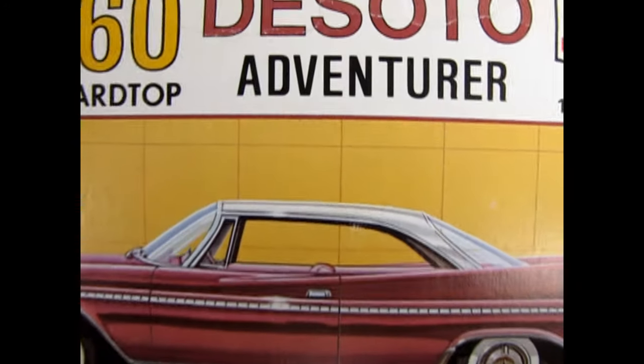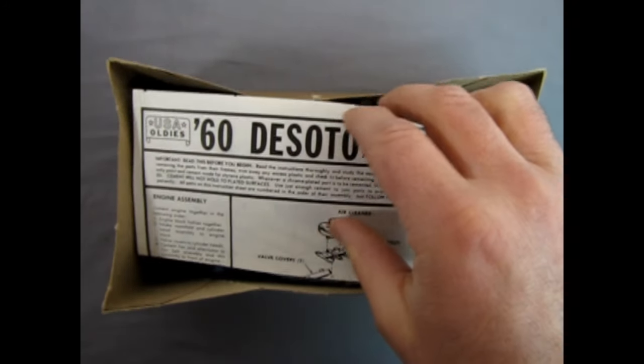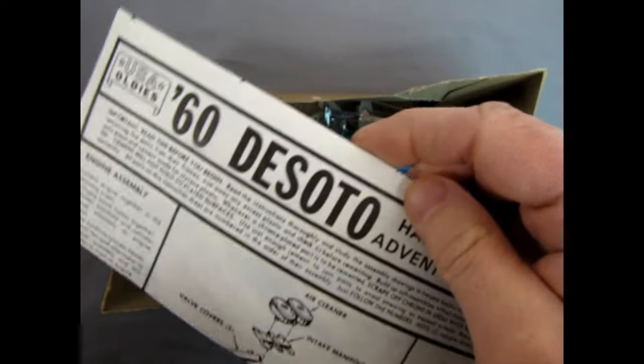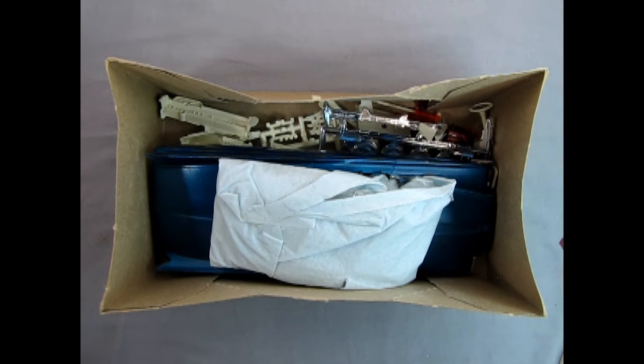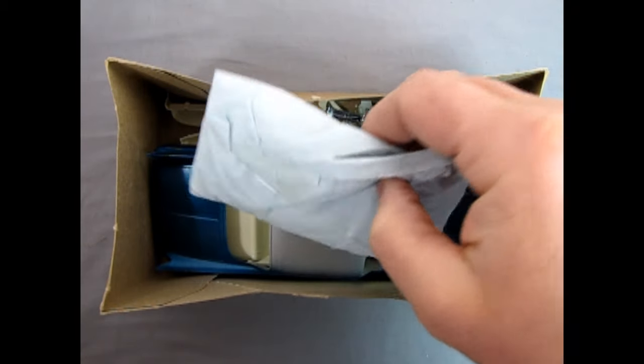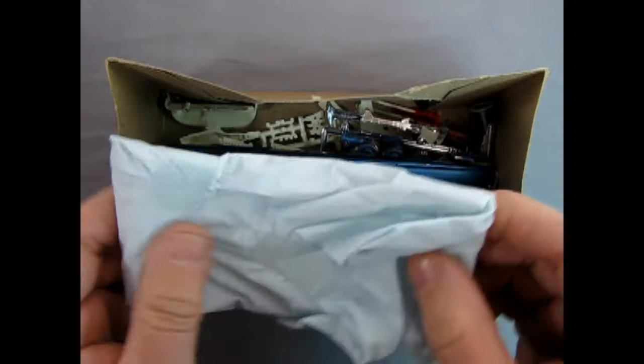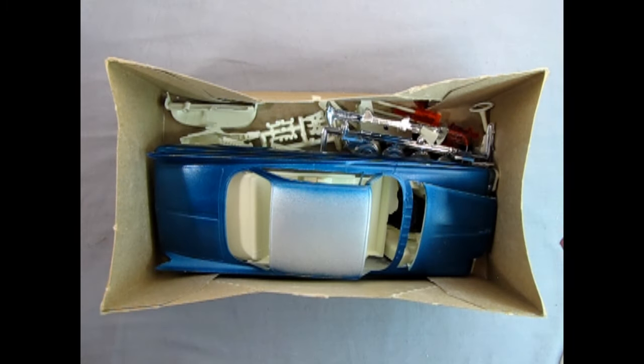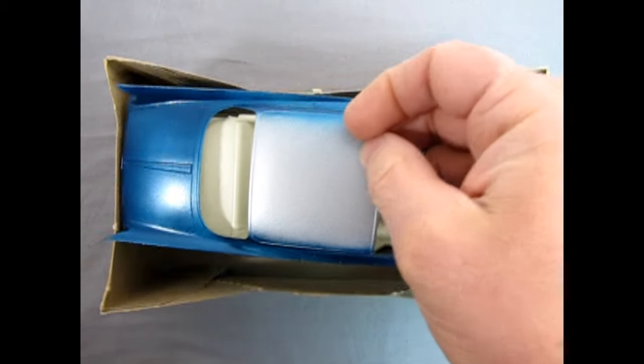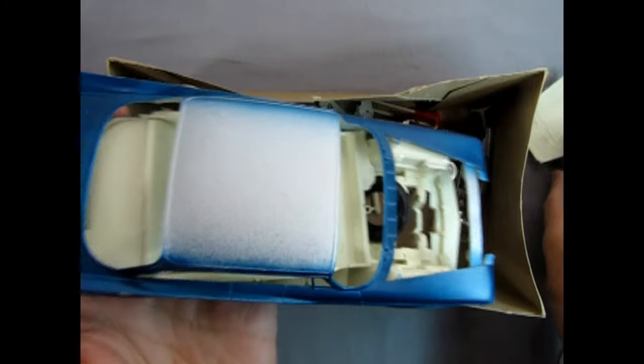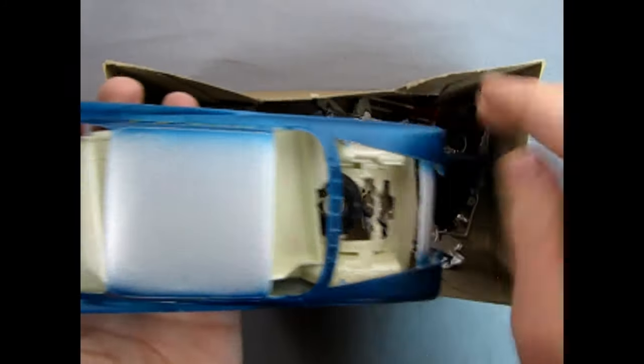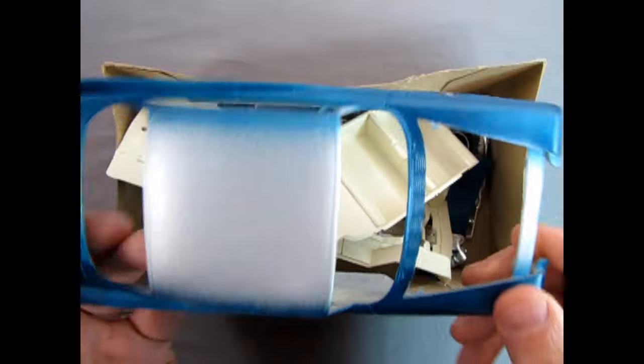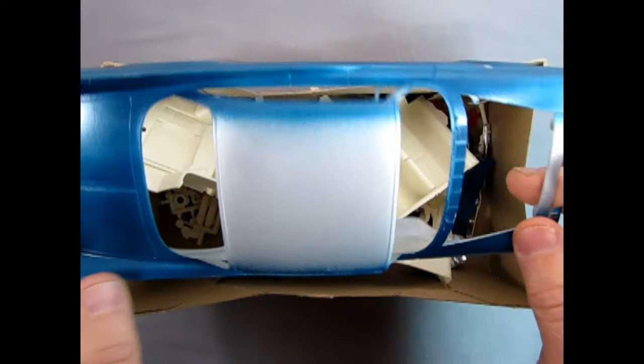We'll begin our adventure of the model kit by taking off the lid of the DeSoto Adventurer kit. Right away we see the wonderful old Johan instruction sheet, really cool because it's just one page printed on both sides. This kit is secondhand, so somebody did start to work on it. My friend John took some precautions, so our glass is inside this bag so it doesn't get scratched. Here we've got the body; there's a lot of bits falling off here because I kind of put it together just to fit it in the box again.